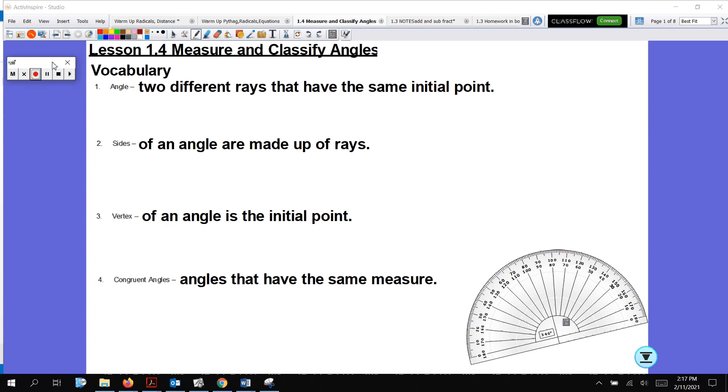With vocabulary, it's very important that we know the definitions. An angle is simply two different rays that have the same initial point. I can picture what that looks like. Here's my initial point. Here's a ray, let's say ray PT, and here's a ray. That's A, and then you go to T. So that's an angle.